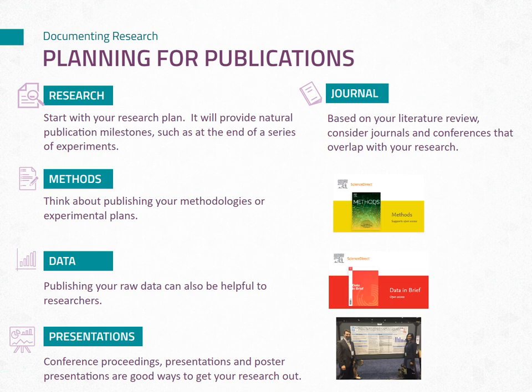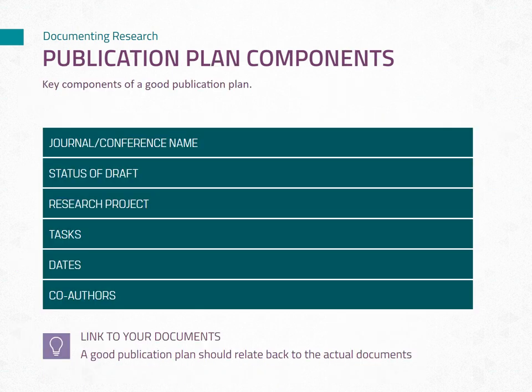When deciding what journal or conference to publish in, consider those that align with your research or that have published research closely aligned with yours. This will typically become evident as you conduct your literature review and note which articles stand out as most relevant. Start with conferences related to your topic of research or discipline of study. When in doubt, consult with your advisor on which conferences and journals they think are most relevant. Once you have determined what you would like to publish and have identified potential conferences and journals, it's time to create a publication plan.